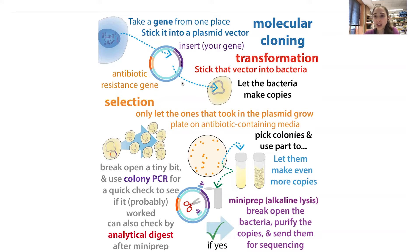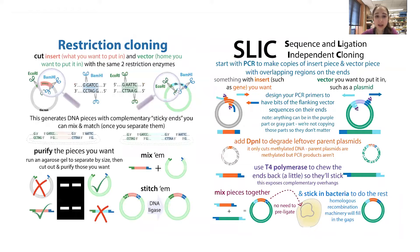We can stick that into bacteria and get the bacteria to make lots of copies for us. We can even get the bacteria to make the protein, or get it cloned into other cell types to make proteins. Even if you end up expressing it in a different cell type, you often have to do molecular cloning — getting bacteria to make lots of copies of your sequences. The key process is taking that gene or genetic information, sticking it into a plasmid, and making sure it actually worked. A couple of the main strategies are restriction cloning and PCR-based methods like SLIC — sequence and ligation-independent cloning.